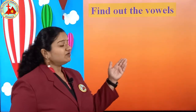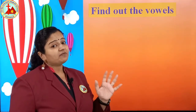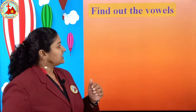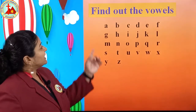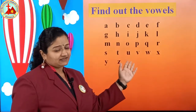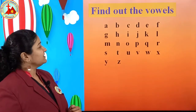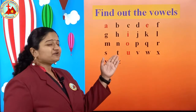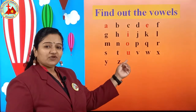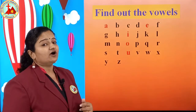Find out the vowels. Now I will give A to Z and from A to Z you have to find only vowels. Come on — tell me which are the vowels. A, E, I, O, U are five vowels. Keep this in your mind.